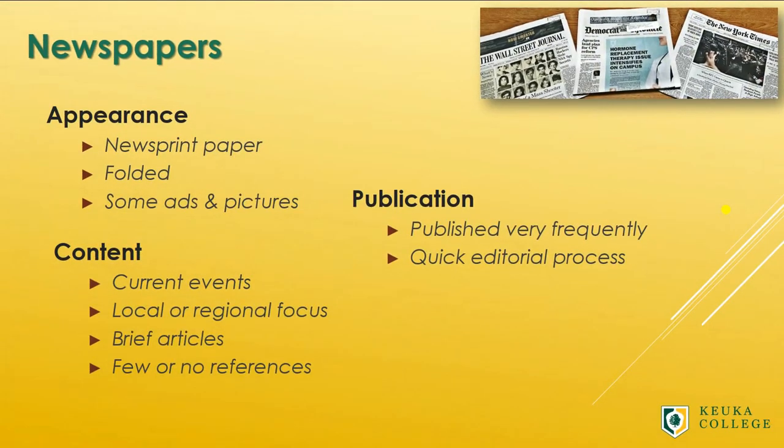Newspapers are really easy to recognize when you see them in person. They're printed on a special kind of paper called newsprint, and they're folded rather than stapled or glued. They often have some ads and pictures spread throughout. But these clues are not really going to be as helpful if you're looking at an article online, so that's when you can use other clues to help you, such as looking at the content.